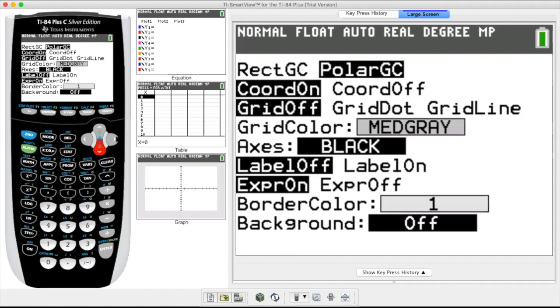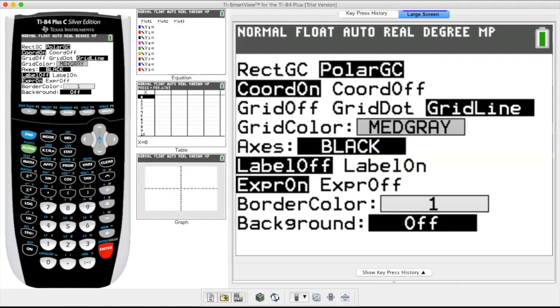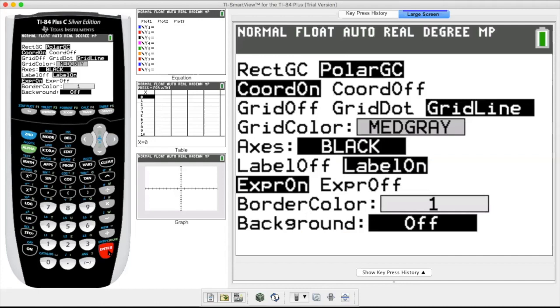So now I'm in polar coordinates are on. The grid is off. Let's see. I'm going to go over to grid lines. So it's blinking on grid lines. Hit enter. Grid color. I don't care. Axes. Let's see. I'm going to turn labels on. We'll see what that does. Labels on. And we should be good.